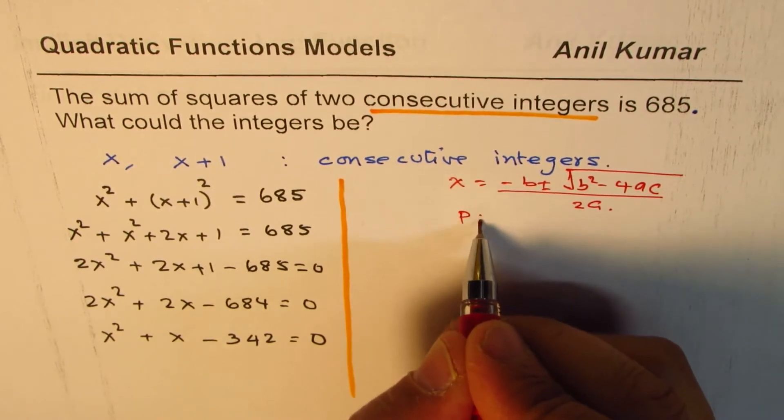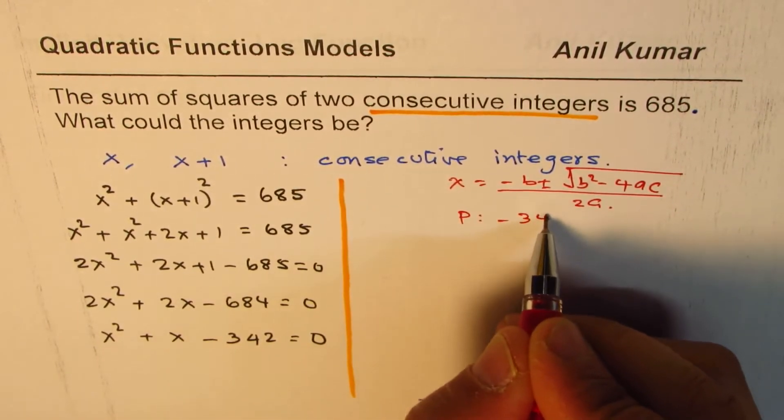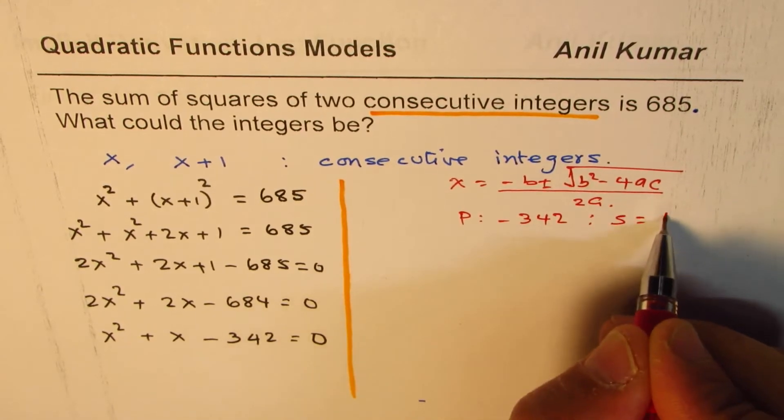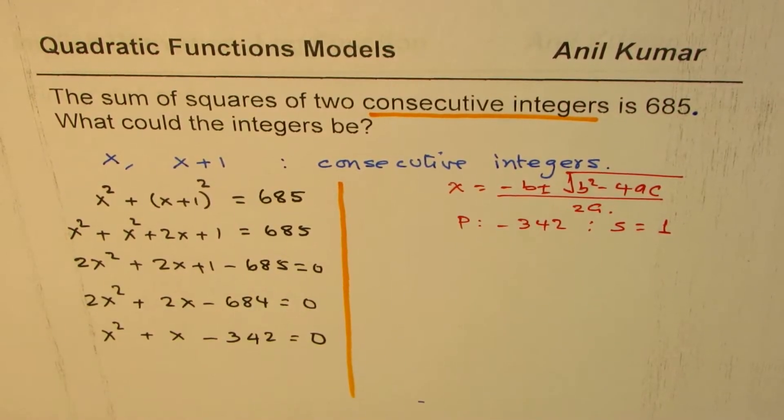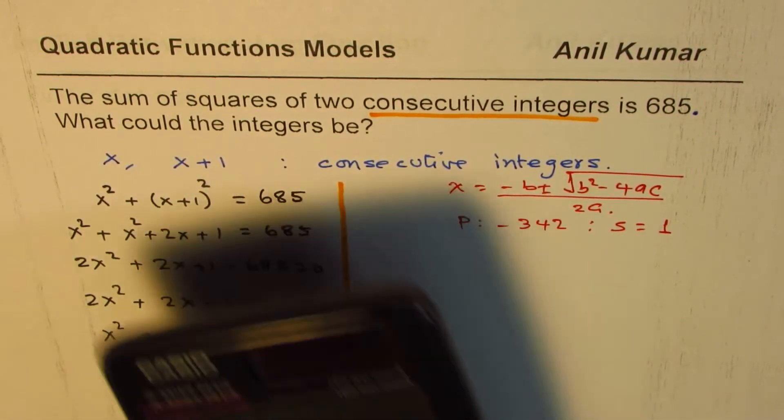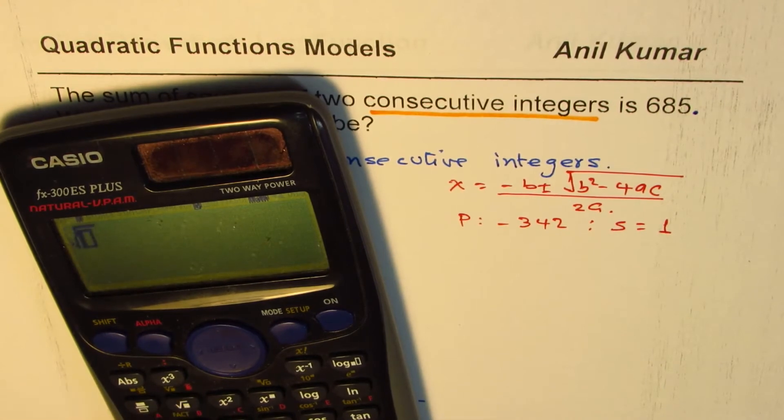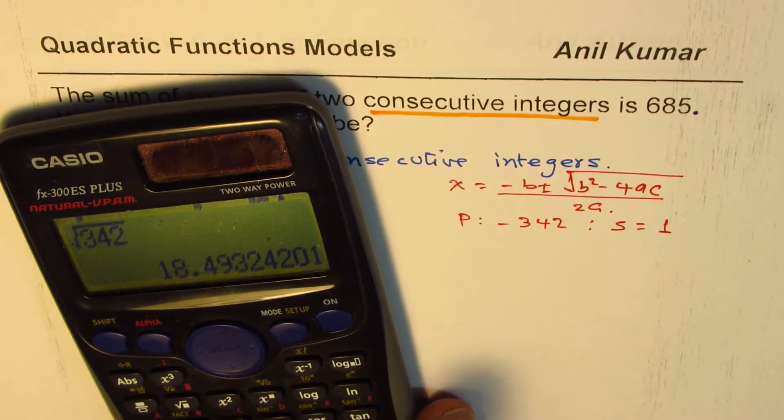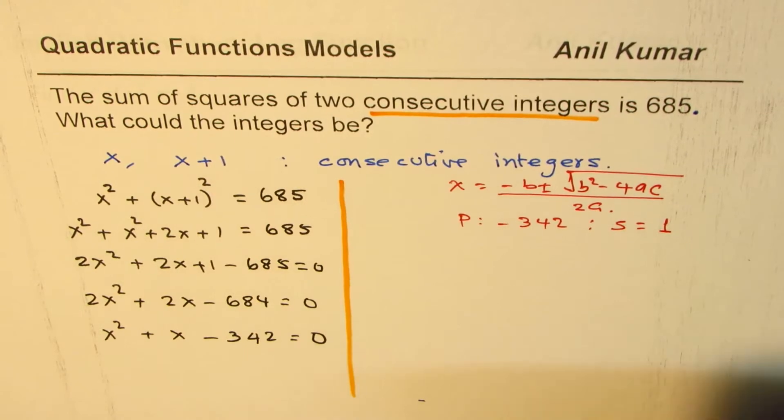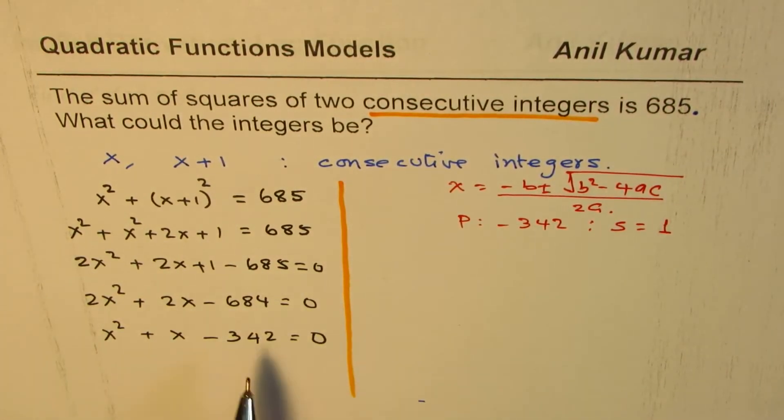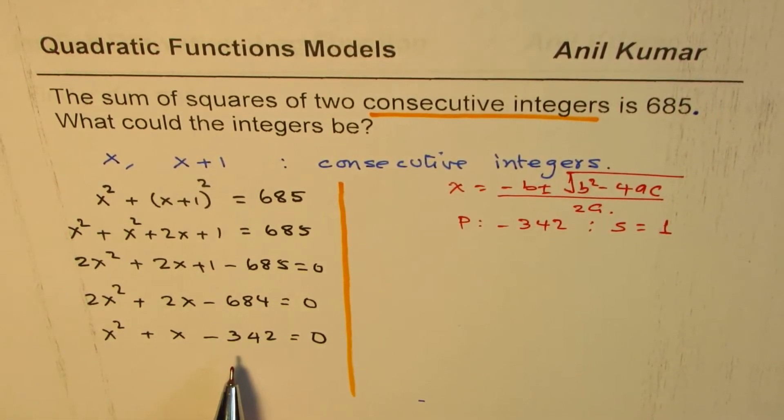Product and sum method could be you're looking for a product of minus 342 and sum of 1, correct? So that means these two numbers are very close numbers. You can always get by kind of square root. So if I do square root of 342 and approximate this to a decimal place, it is somewhere between 18 and 19.